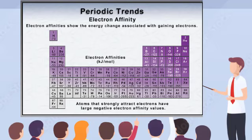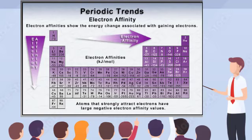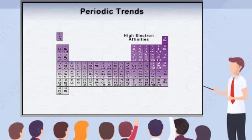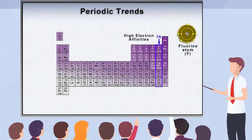Therefore, atoms that attract electrons more strongly have a larger negative electron affinity value. The periodic trend in electron affinities shows that they generally decrease moving down a group, and increase moving across a period. The elements on the right of the periodic table tend to have high electron affinities because gaining electrons moves them toward the energetically favorable octet. The highest electron affinity values, reflected by large negative numbers, are found in the halogens in group 7A. These elements achieve an octet by gaining a single electron.